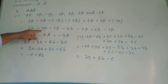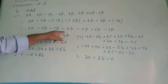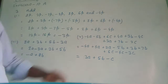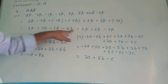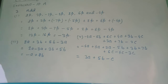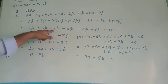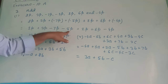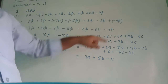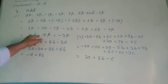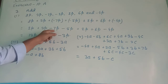First, I added all the terms with positive sign: 2p plus 3p plus 2p plus 6p gives 13p. Then I added all the terms with negative sign: 5p plus 7p plus 5p gives 12p, plus 4p gives 16p. The sign will be negative because we follow the sign of the greater number.